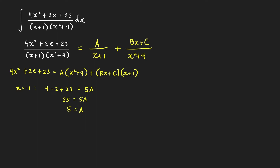Another good choice is x = 0 because it makes the Bx term equal to 0. Plugging in x = 0 gives 23 = A(0 + 4) + C(1), and since A = 5 that is 23 = 20 + C, which gives C = 3.